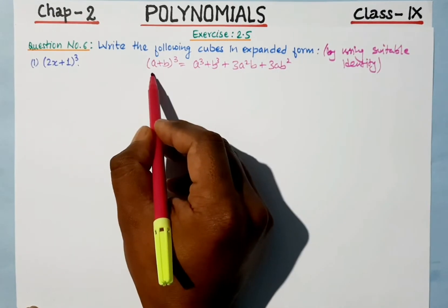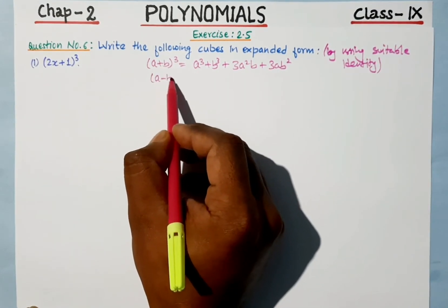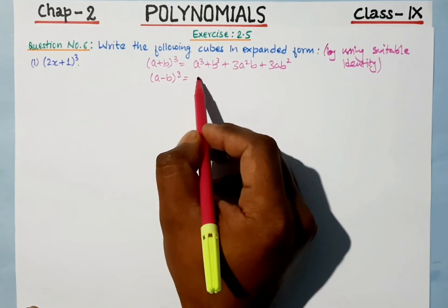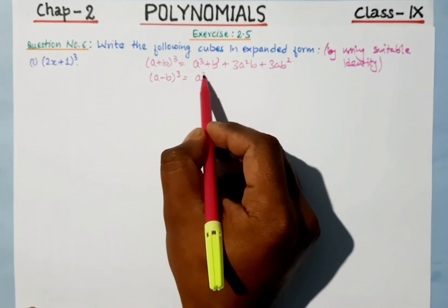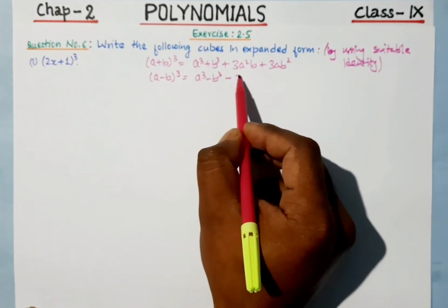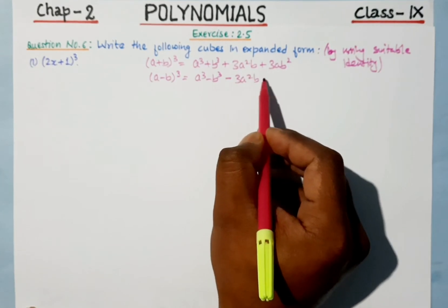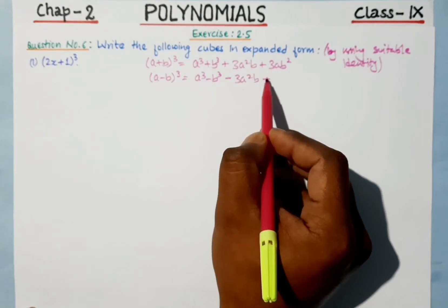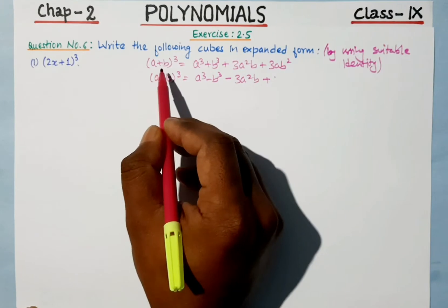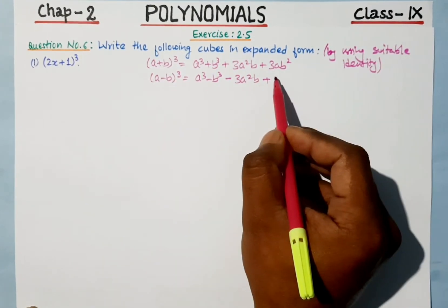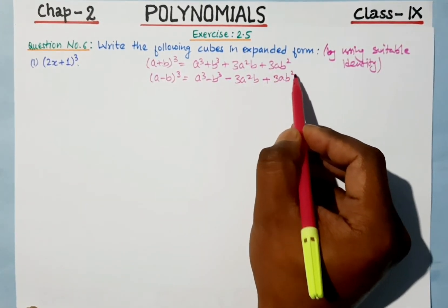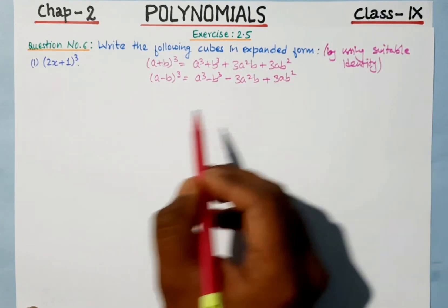We also have the (a minus b) whole cube identity: a cube minus b cube minus 3a squared b plus 3ab squared. We will use the appropriate identity depending on the sign.